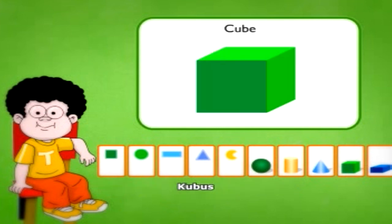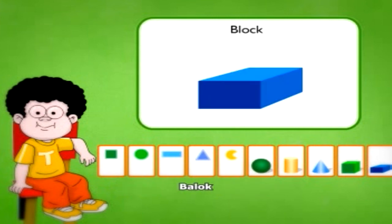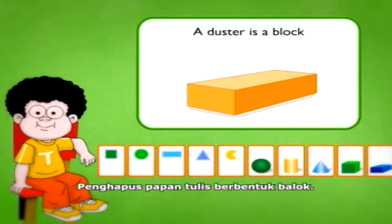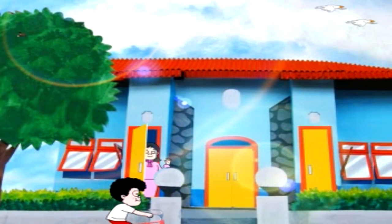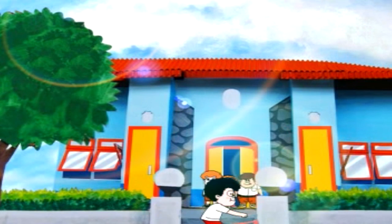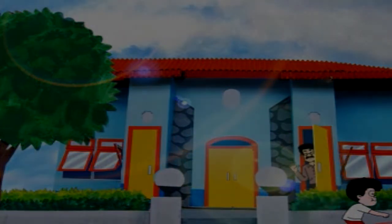Round — a basketball is round. Cylinder — a tube is a cylinder. Cone — a birthday hat is a cone. Cube — an ice cube is a cube. Block — a duster is a block.